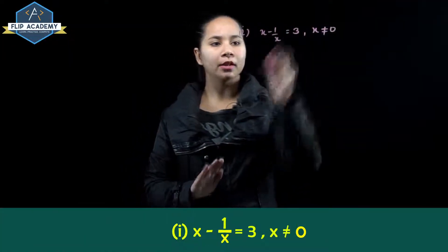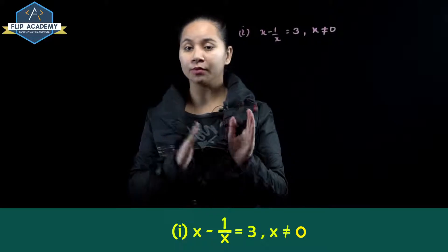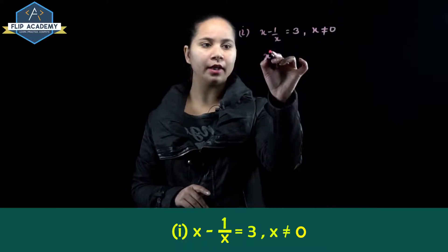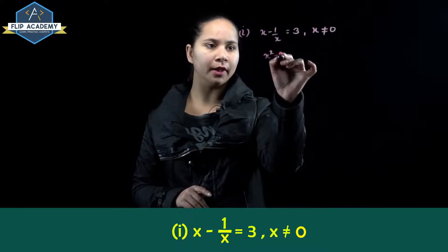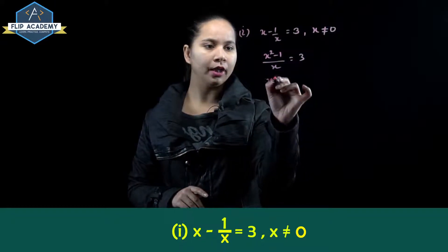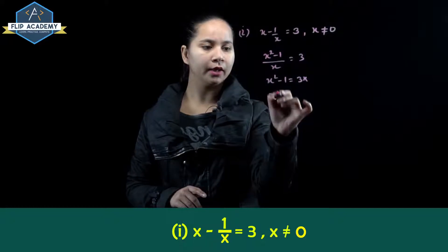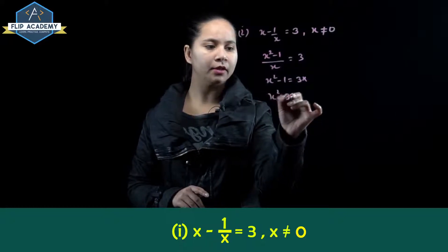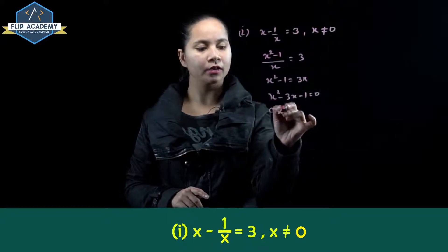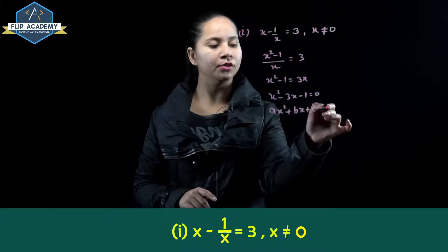We need to find the roots of this equation. First, simplify it: x minus 1 upon x equals 3. Multiplying through, x squared minus 1 equals 3x, so x squared minus 3x minus 1 equals 0.